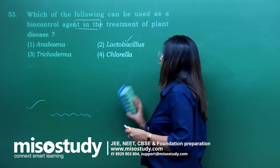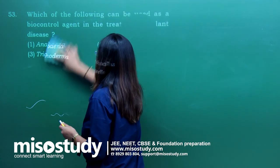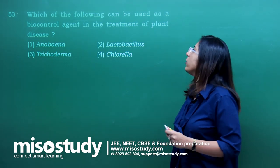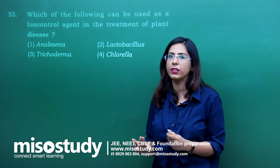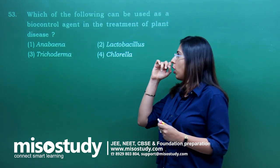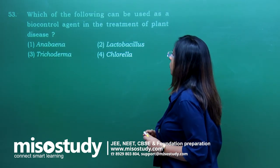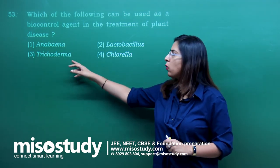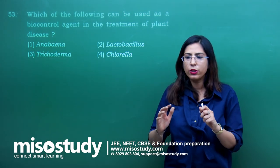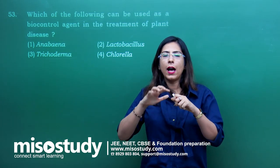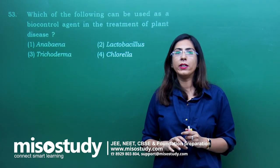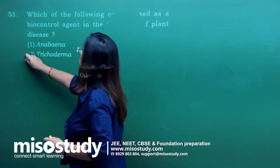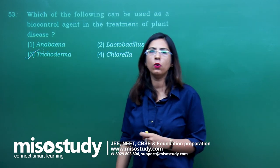Question number 53 — which of the following can be used as a biocontrol agent in the treatment of plant disease? The four options are Anabaena, Lactobacillus, Trichoderma, and Chlorella. Trichoderma is the correct option — it is used to inhibit soil-borne diseases caused by fungi. The correct answer is option C — Trichoderma.